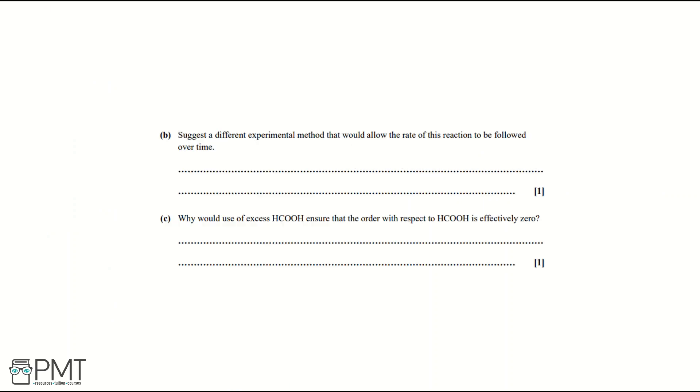Part B: Suggest a different experimental method that would allow the rate of this reaction to be followed over time. To get the marks for this question you must say that you're going to measure the volume of carbon dioxide produced. And that's a different experimental method you can use to monitor rate of reaction.